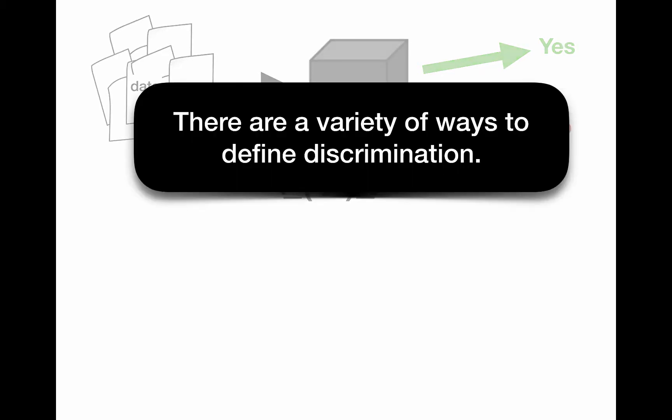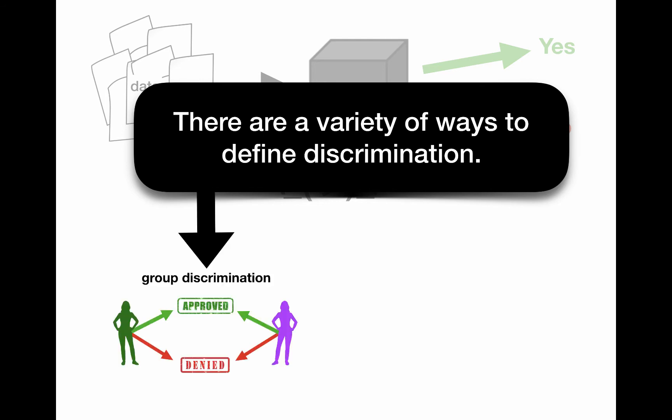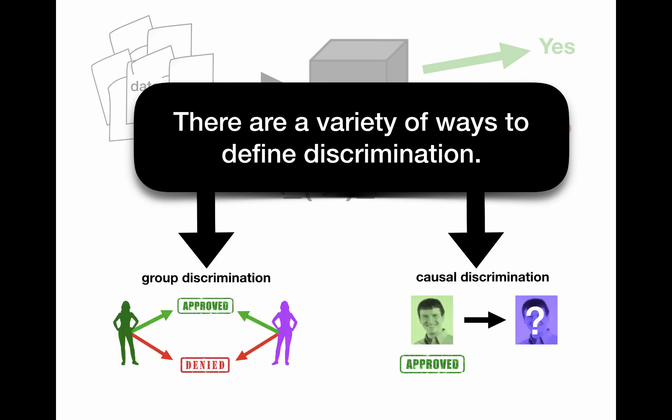While there are a variety of ways to define discrimination, our work focuses on two kinds of discrimination — group and causal — which we will define now.